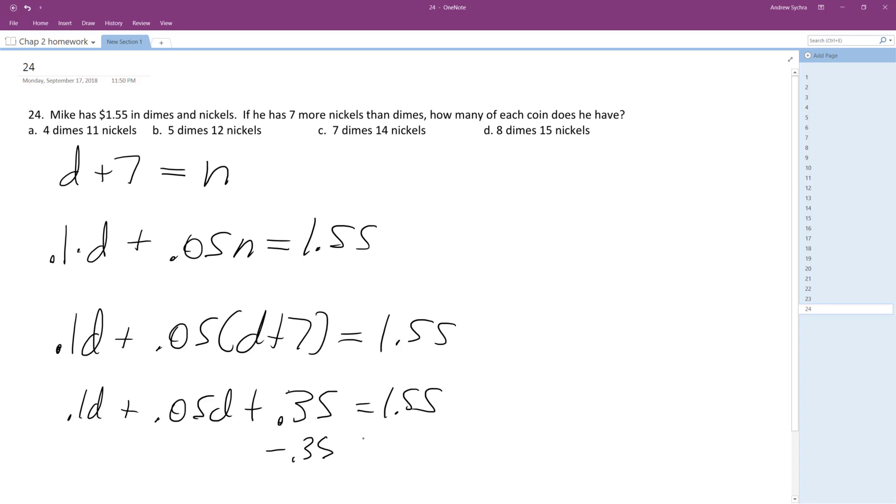So I get 0.15d is equal to $1.20. Divide 0.15 by 0.15, number of dimes is equal to eight. And then d plus seven, so that means the number of nickels is equal to 15 nickels.